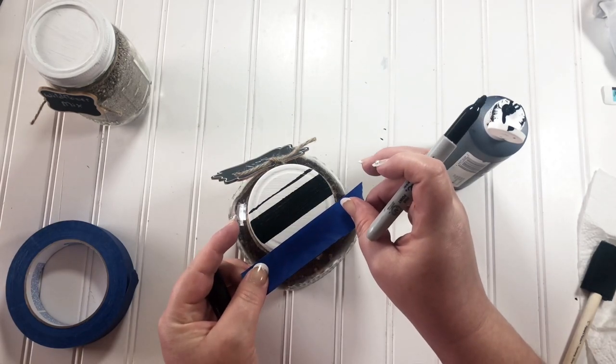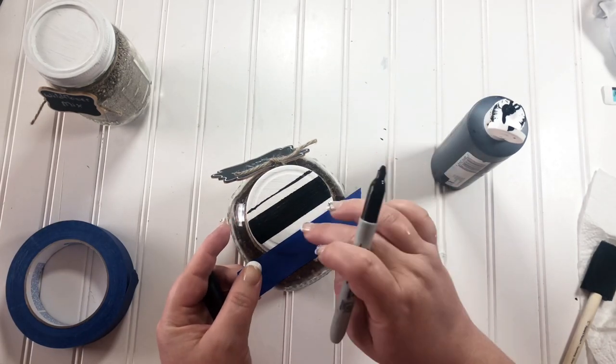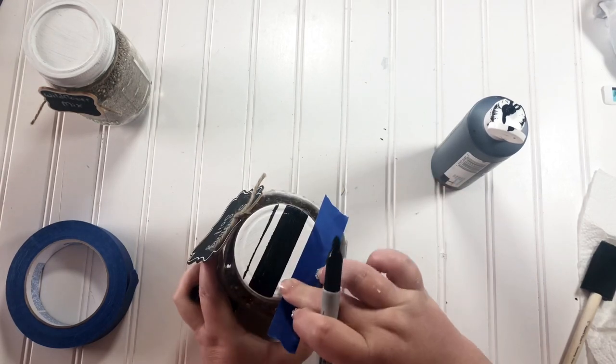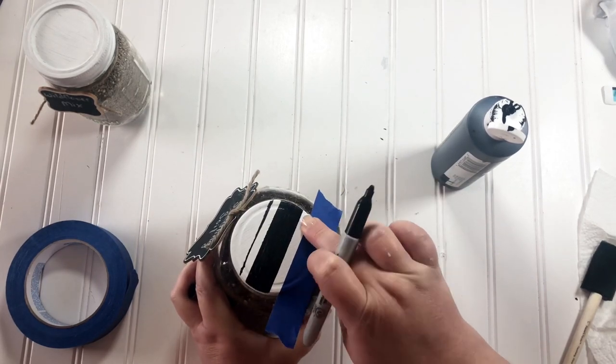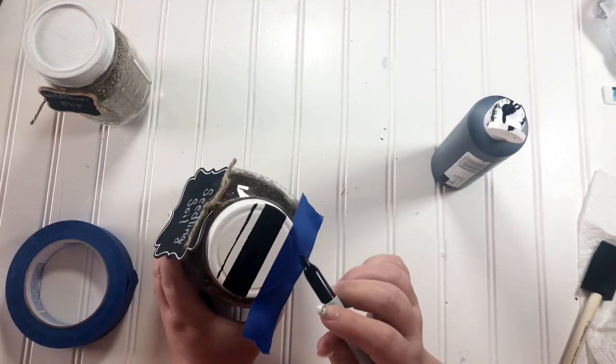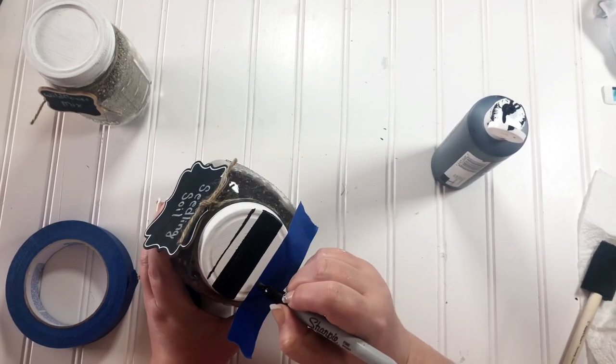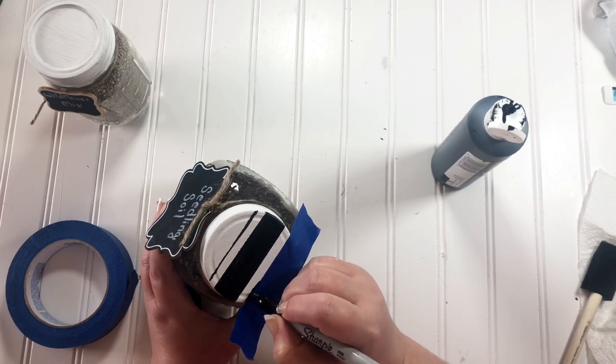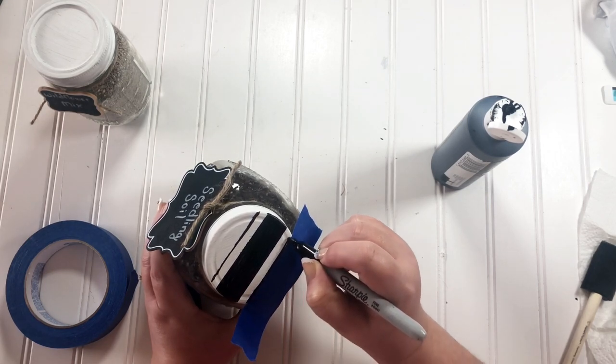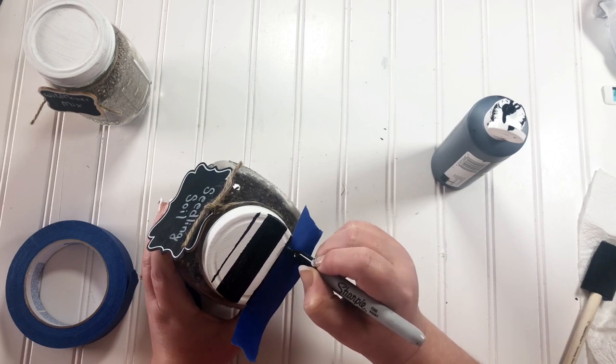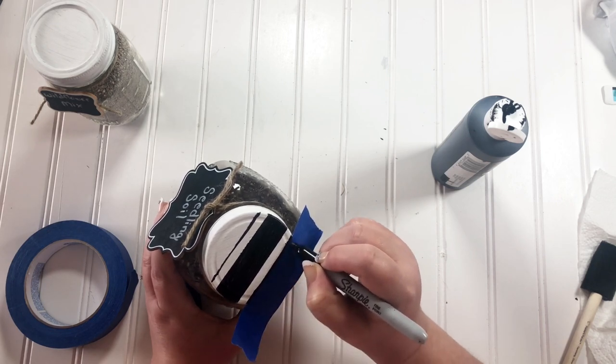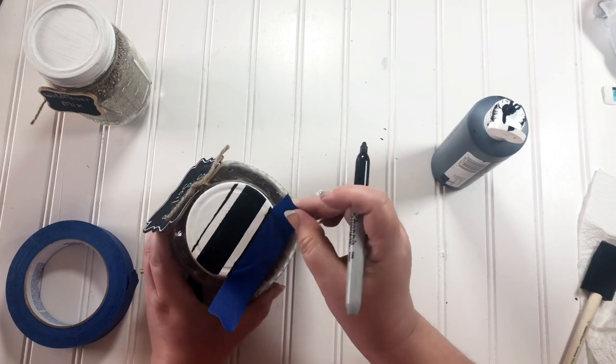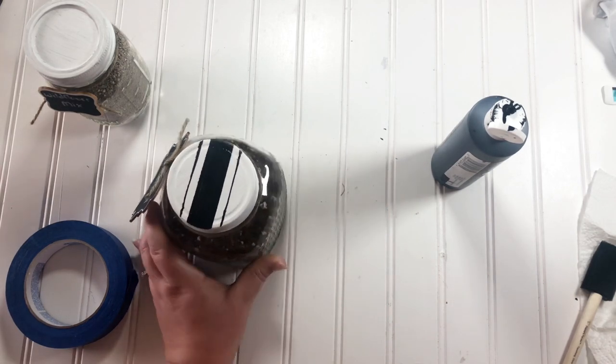Then to make the smaller, tinier stripes on the side of the fat chunky stripe, all I did was put down a piece of the painter's tape and use my Sharpie marker just to draw a straight line. It's not as crisp and clean a line if you were to be taping it all off, but sometimes I think farmhouse style is imperfections, and I liked that these lines were not perfectly crisp.